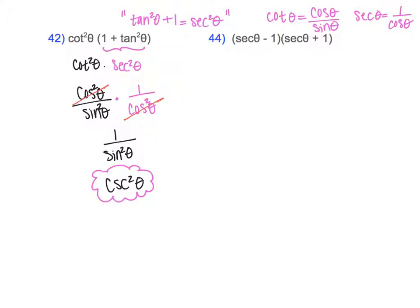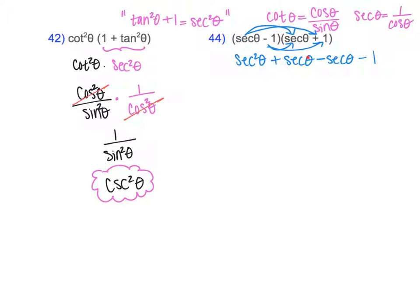Notice I'm now using several different identities to help me simplify as much as I can. In problem 44, I notice there are two factors, and I can use the FOIL property to distribute. Secant times secant is secant squared. Secant times 1 is secant. Negative 1 times secant is negative secant. And negative 1 times positive 1 gives negative 1. The middle terms — positive secant and negative secant — cancel out, leaving secant squared minus 1.